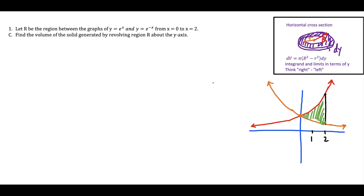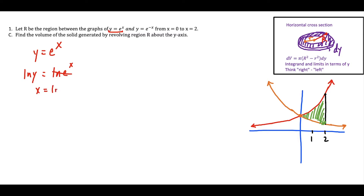For question 1c, we rotate region R around the y-axis using horizontal cross sections. When using horizontal cross sections, everything must be in terms of y. Starting with y equals e to the x, we take the natural log of both sides: natural log of y equals natural log of e to the x, which gives us x equals natural log of y.